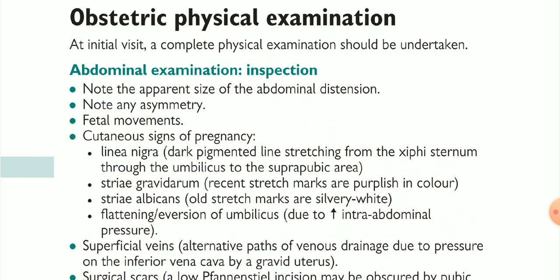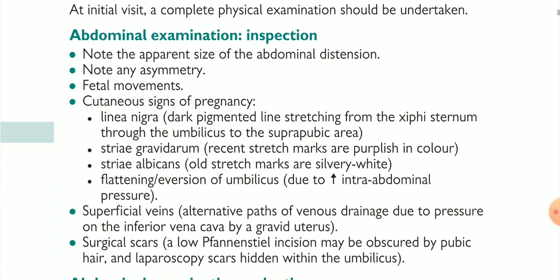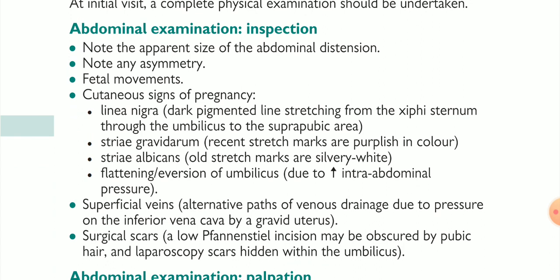In obstetrics physical examination, at the initial visit a complete physical examination should be undertaken. Number one is the abdominal examination. For inspection of the abdomen of the pregnant lady, note the apparent size of the abdominal distension, because the pregnant lady has the product of conception in her womb, so the abdomen is distended. We have to measure and inspect the size of the abdominal distension.